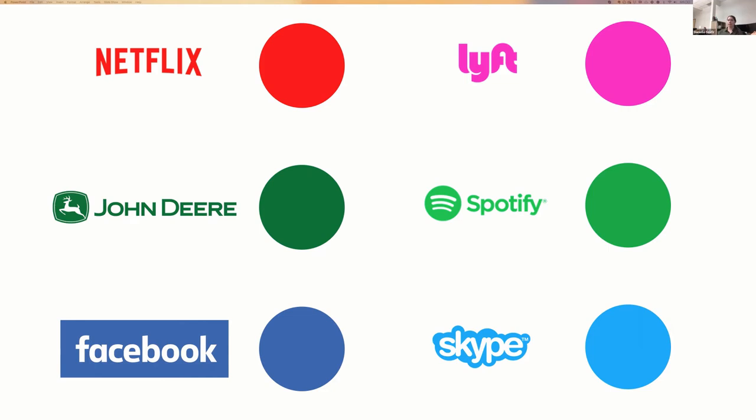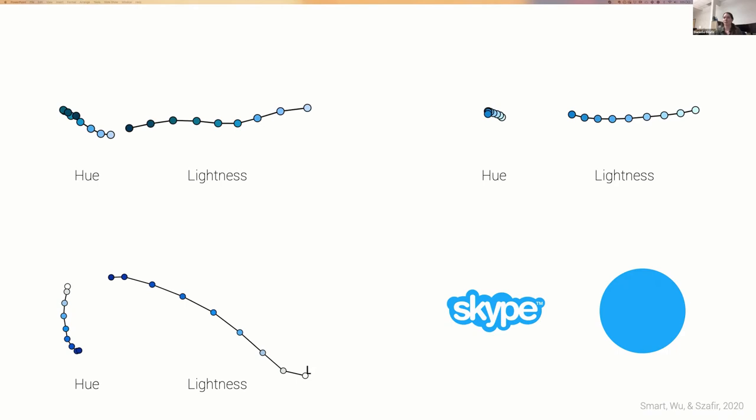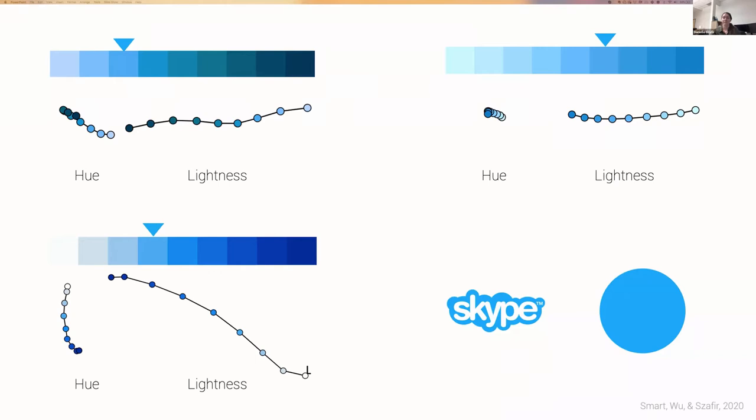This problem leads us to a challenge: how do we actually create effective color ramps? We developed an algorithm that lets you create high quality color ramps using just one single guiding color. We accomplished this by computing characteristic structures in designer ramps in a perceptual color space, and then applying those ramps to a given color to generate a set of ramps with different visual characteristics.